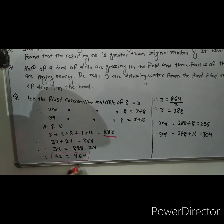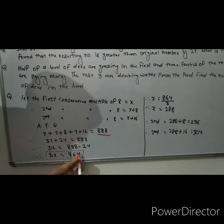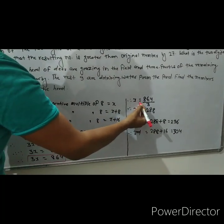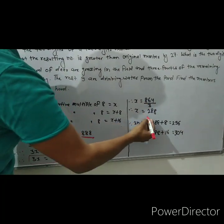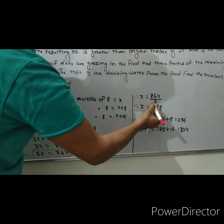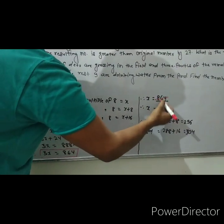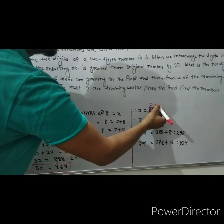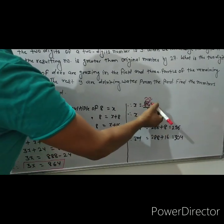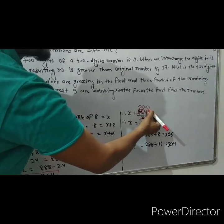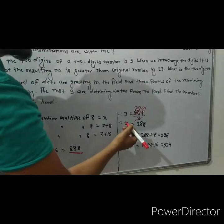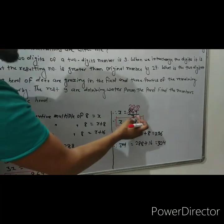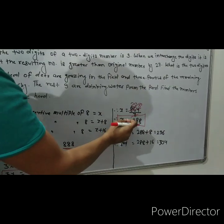When we move 3 to the right hand side, it goes as division. Therefore x is equal to 864 divided by 3. Dividing 864 by 3 gives us 288. Therefore x is equal to 288, which is the first multiple of 8.